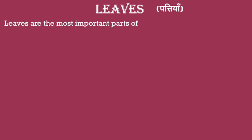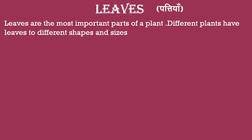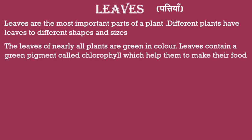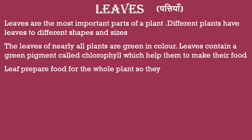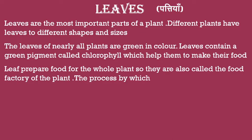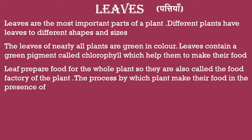And next part of the plant is leaves — pattiyaan. Leaves are the most important part of the plant. Different plants have leaves of different shape and size. The leaves of nearly all plants are green in color. Leaves contain a green pigment called chlorophyll, which helps them to make their food.